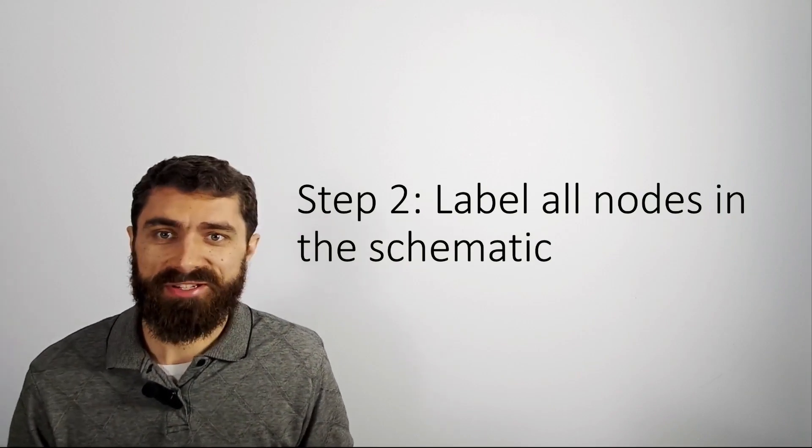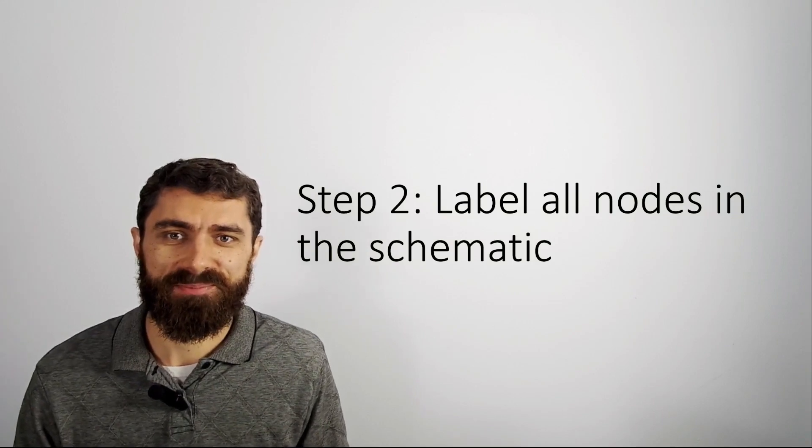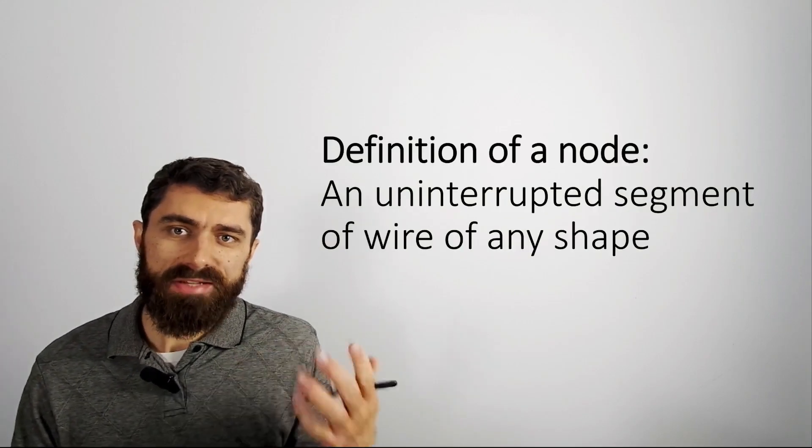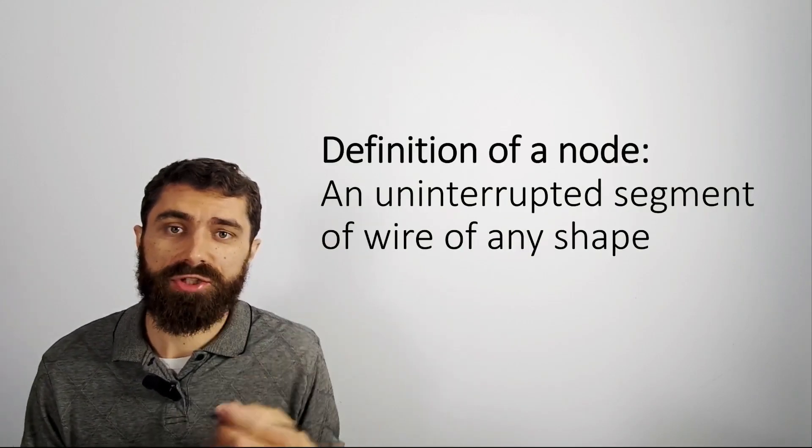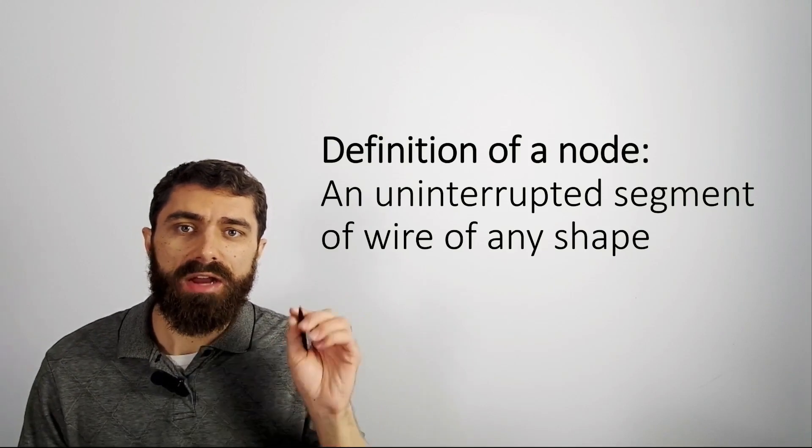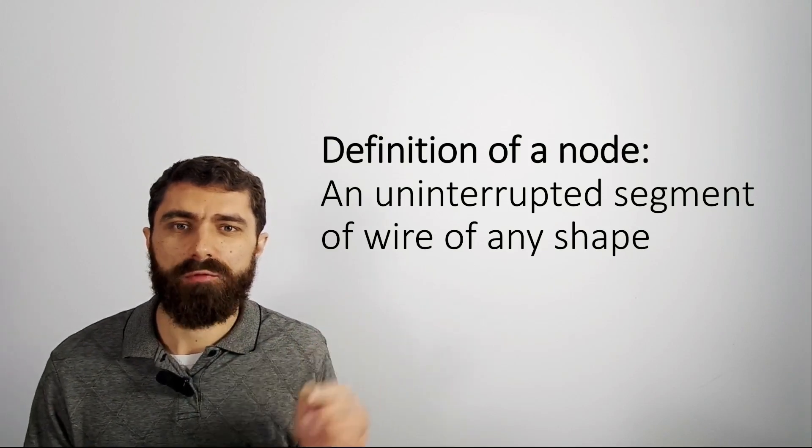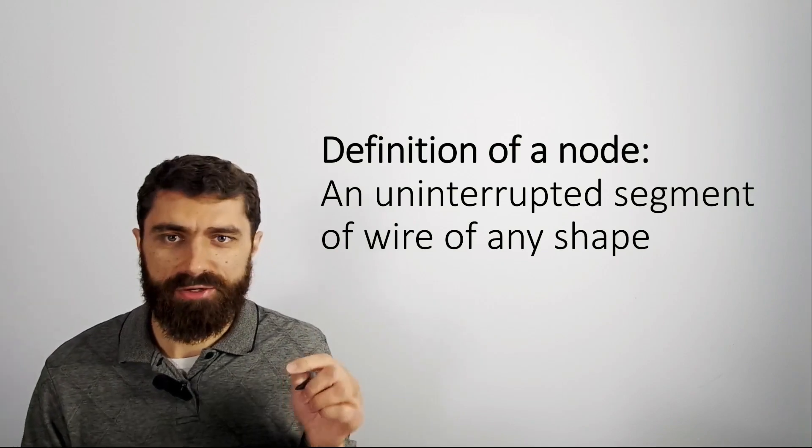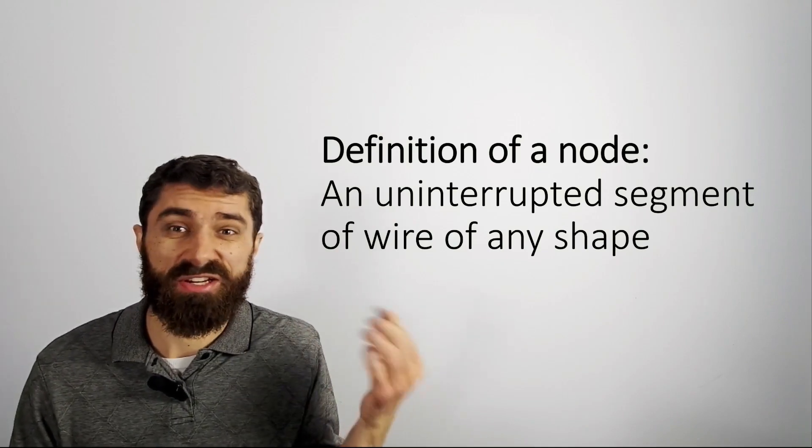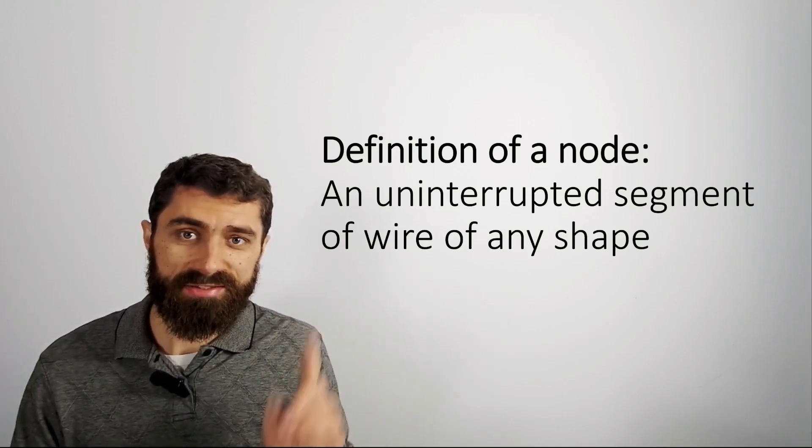So what is a node or what is a net? I will go ahead and explain that. Basically, the definition of a node is an uninterrupted segment of wire of any shape. Now you're probably wondering what does that mean for it to be uninterrupted? Let me give you an example.